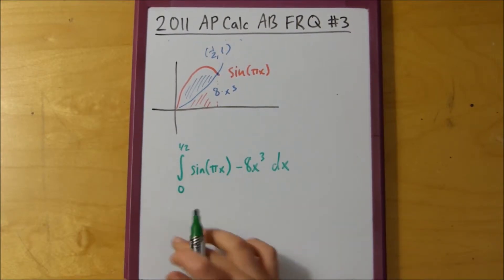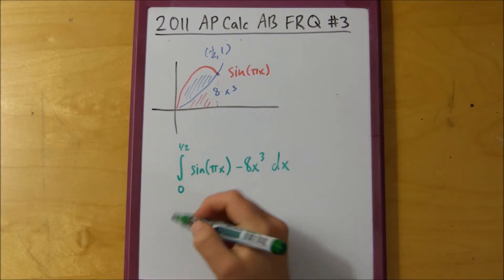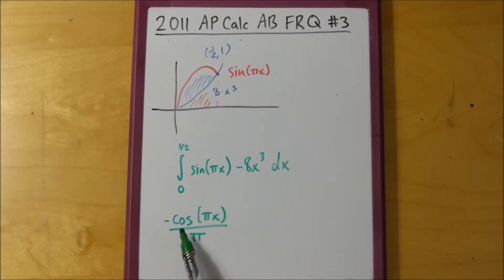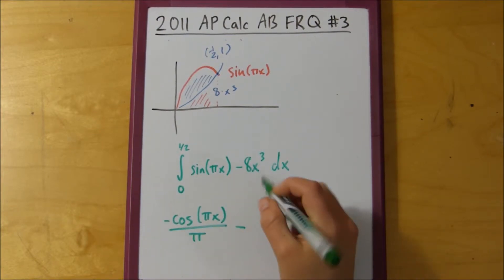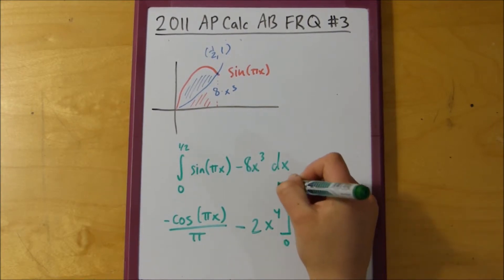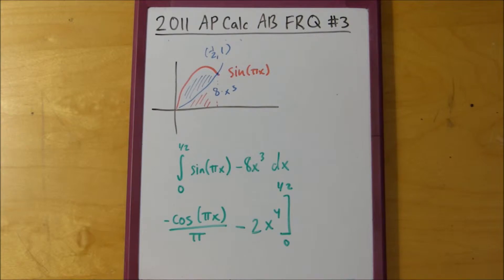We know that the integral of sine is negative cosine pi x, and then we divide it by pi because we know that when we take the integral, we're going to take the integral of cosine first, and then the integral of the inside part, and we don't have a pi in the derivative, so we're going to have to get rid of that. Then the integral of 8x cubed is 2x to the fourth, that from 0 to 1 half. I guess I'll move up here, erase this.